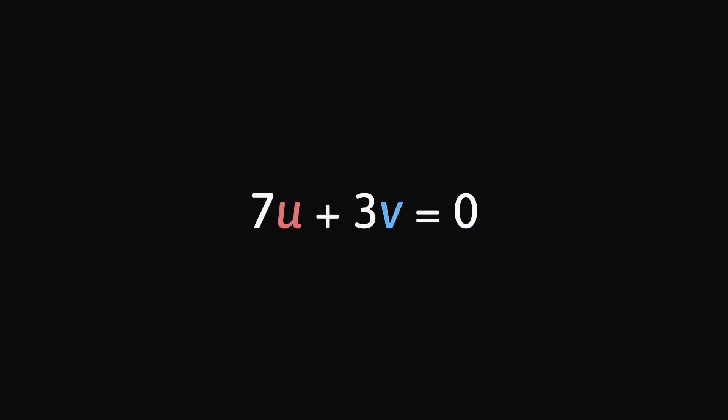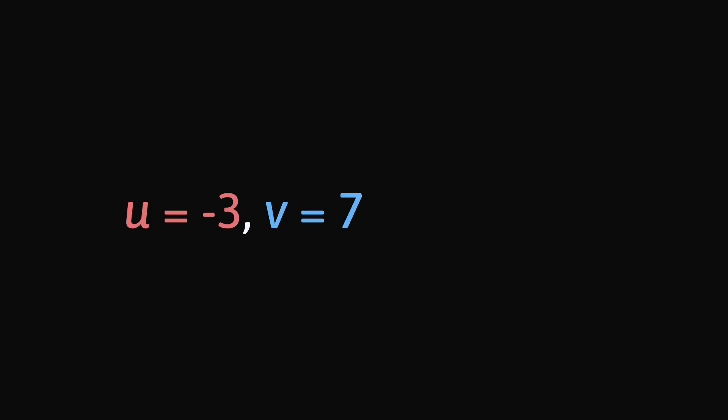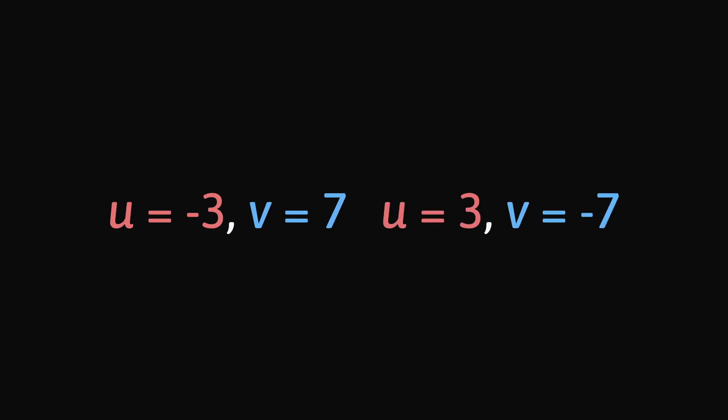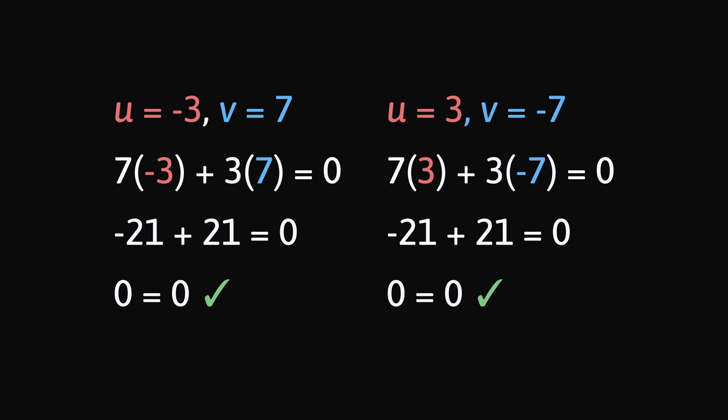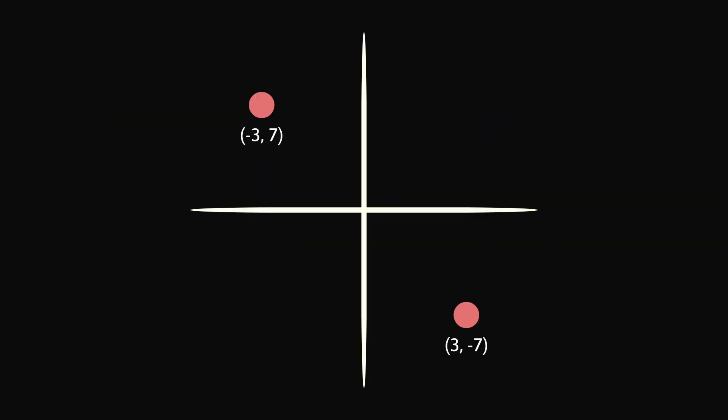Your underpaid teacher wants you to solve for u and v using just this one equation. The student to your left answers 3, negative 7. The student to your right answers a similar answer but flips the sign around. As you can see, both students are correct — this equation generates no unique answers. Graphing these answers forms a line, and within this line are all possible answers.